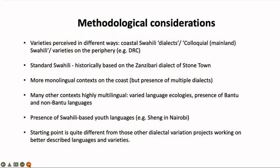We're also interested in youth language practices, primarily Swahili-based languages — Sheng in Kenya, particularly Nairobi. How do we tease apart the role of a youth language or urban youth language, and how does that link to identity? We've also had people ask us whether we think Sheng is a variety of Swahili, which is an interesting question in itself. And in Tanzania we have youth language practices as well that we're interested in.